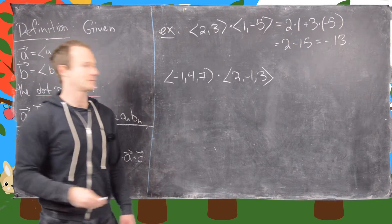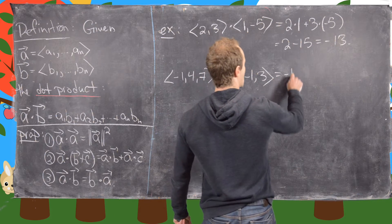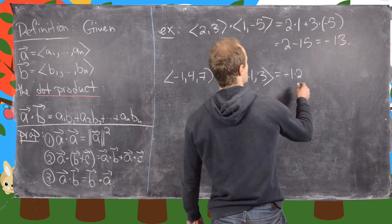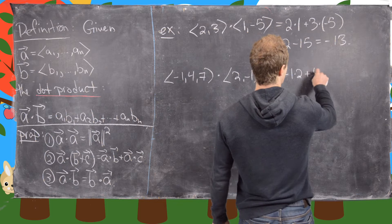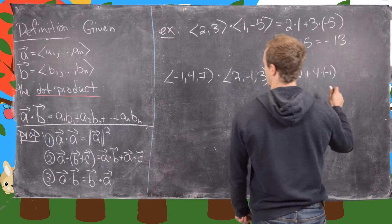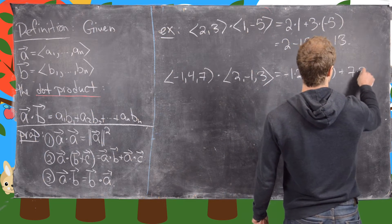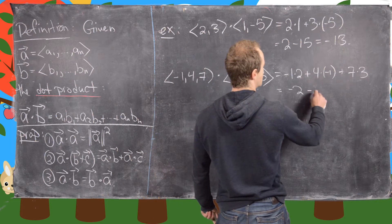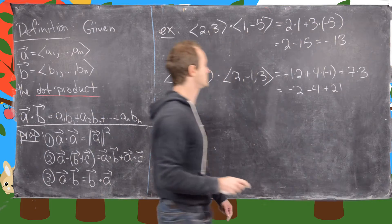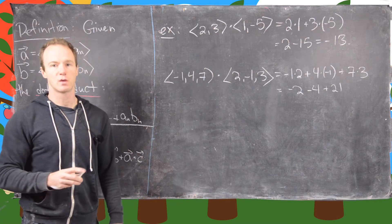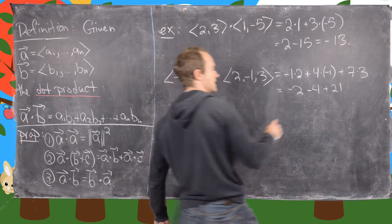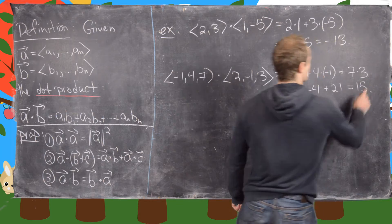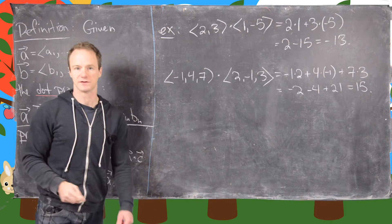So that's going to give us minus 1 times 2 plus 4 times minus 1 plus 7 times 3. So that will give us minus 2 minus 4 plus 21. So that's 21 minus 6, which will be 15. So that's the dot product of those two.